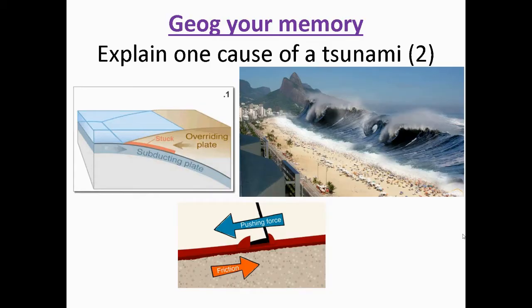This question is asking you to explain one cause of a tsunami. It's a two mark question, so you're only being asked about one of the causes in your answer. You need to make sure you make one point and explain why it is that it is happening.